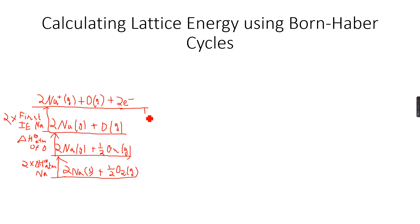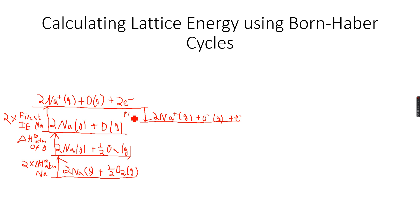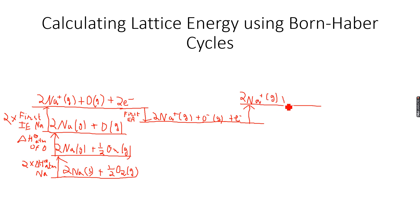Now we go down and give electrons to oxygen. We get two Na⁺ gas plus O⁻ gas, plus one mole of electrons — it has only taken one mole of electrons so far. This is the first electron affinity of oxygen. Since O⁻ is negatively charged, we now have to give energy to add another electron, just like the last example — energy was released first, but now we're putting energy in to get O²⁻ gas.